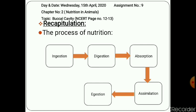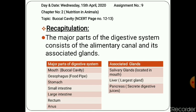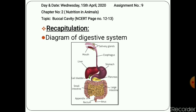We also studied the major parts of the digestive system, which consists of the alimentary canal and its associated glands. The major parts are: mouth (the buccal cavity), esophagus (also called the food pipe), stomach, small intestine, large intestine, rectum, and anus. The associated glands include salivary glands located in the mouth, the liver — which is also the largest gland of the body — and the pancreas. We also drew and labelled the digestive system.